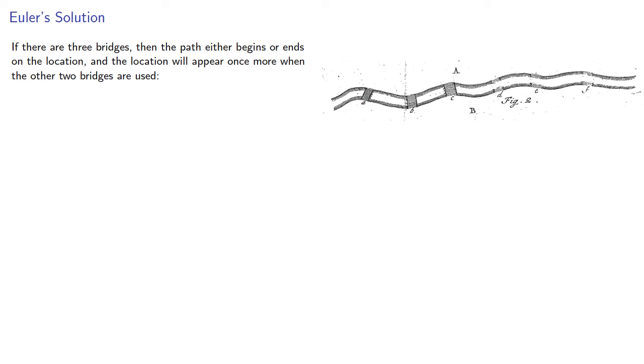If there are three bridges, then the path either begins or ends on the location, and the location will appear once more when the other two bridges are used. So it'll either appear once at the beginning, and then once more someplace in the middle when the other two bridges are used, or it'll appear once in the middle, and then once at the very end when the last bridge is taken, so the location appears twice.